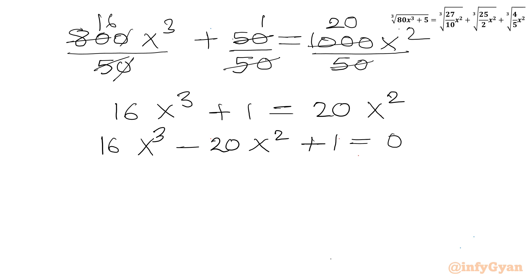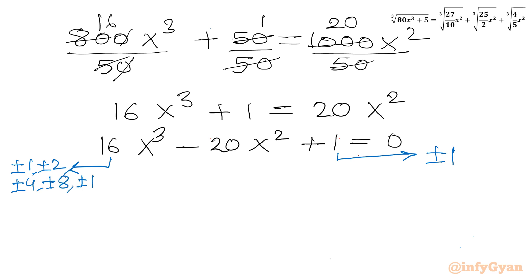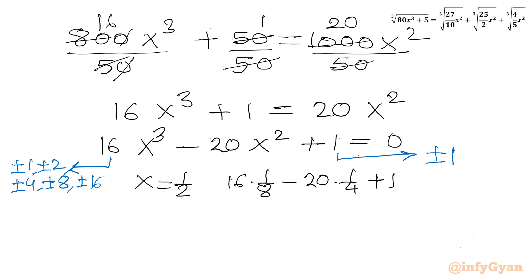I'll write eligible factors of the constant term 1: ±1, ±2, ±4, ±8, ±16. Now let's take the ratio of constant to leading coefficient for our base solution. If I consider x = 1/2: 16·(1/8) − 20·(1/4) + 1 = 2 − 5 + 1, which is not zero. So x = 1/2 is not a base solution.